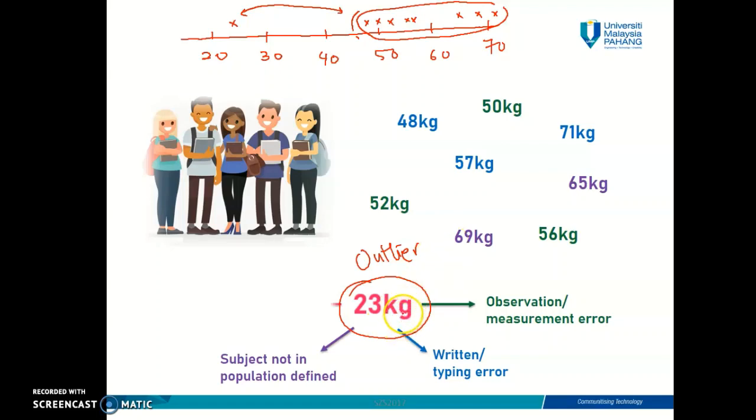Or it could be because the subject which participate in that data collection is actually not in the population defined. What I mean is probably there is a primary school student who participate in the data collection process. So this could have lead to this extremely low value of data compared to the other data in the set. Or perhaps it's true that there is a student, a university student with 23 kilogram weight. It could have occurred by chance. So maybe this person has some health issue.